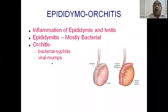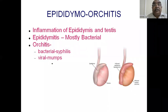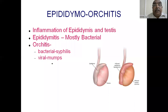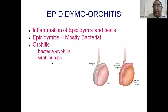The first topic is epididymo-orchitis. Inflammation of the epididymis is called epididymitis and inflammation of the testes is called orchitis. We discuss them together because, though epididymitis is more common, the infection usually spreads to the testes. Regarding etiology, epididymitis is usually a bacterial disease, whereas orchitis can be bacterial like syphilis, or viral like mumps.